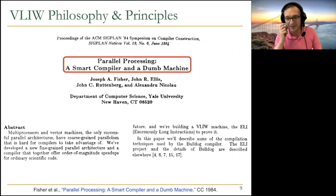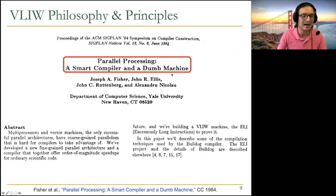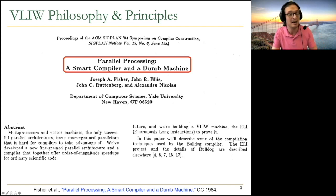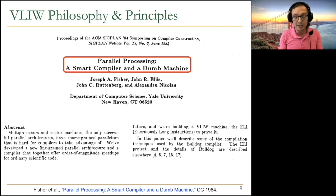Josh Fisher's paper on VLIW captures the philosophy in its title: achieve parallel processing with a 'dumb' — as simple as possible — machine, while the compiler is smart. The claim is that a new fine-grained parallel architecture plus a smart compiler together offer order-of-magnitude speedups for ordinary scientific code — code that's easily analyzable without hard-to-predict dependencies.